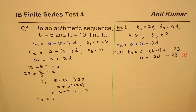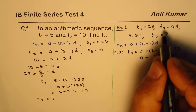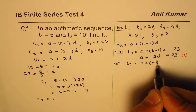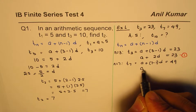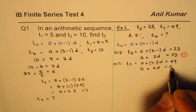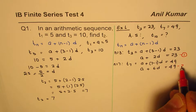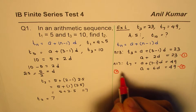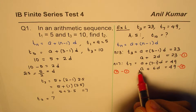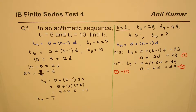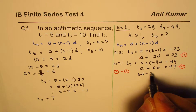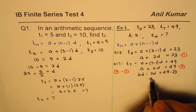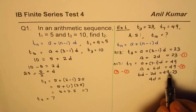Now writing the seventh term with n=7: t7 = a + (7-1)·d = 49, giving us a + 6d = 49. That is equation 2. Taking equation 2 minus equation 1, the a terms cancel. We get 6d − 2d = 49 − 23, so 4d = 26.